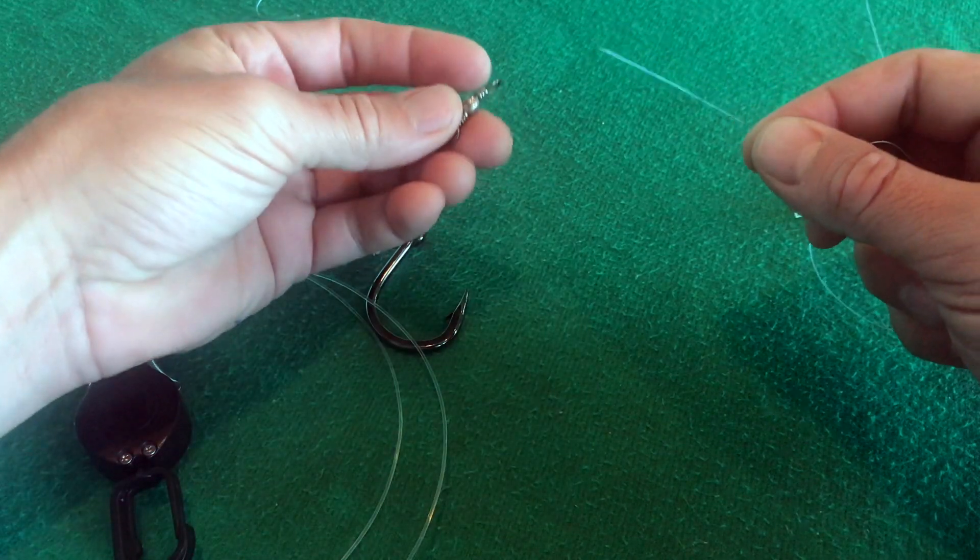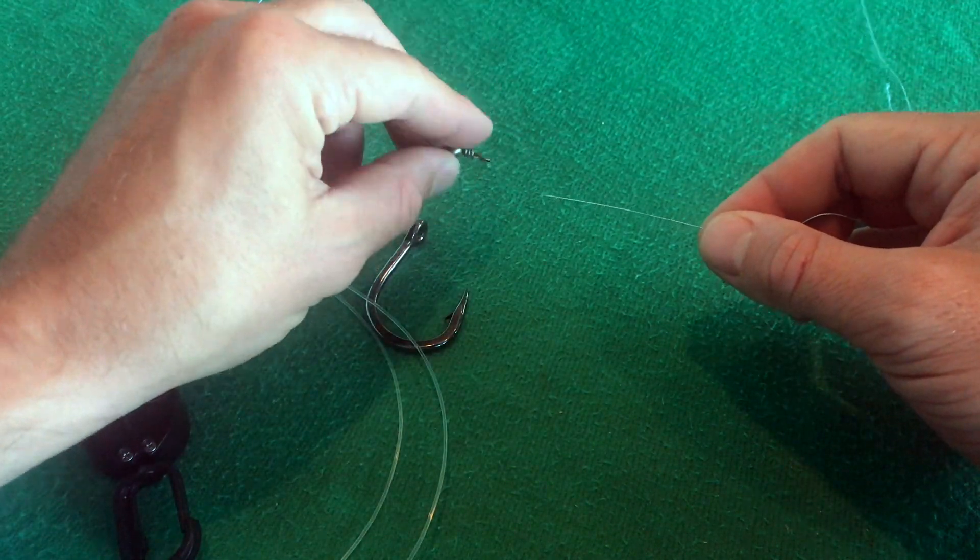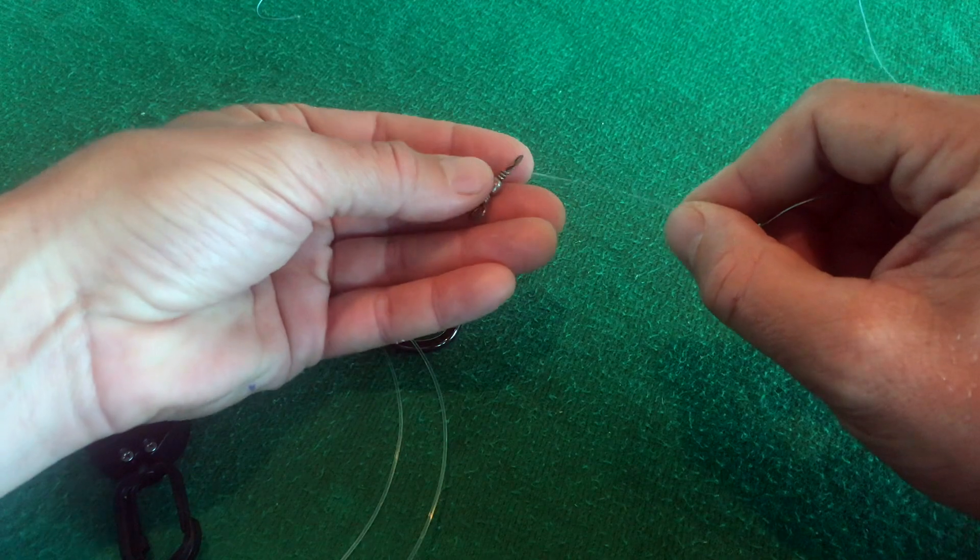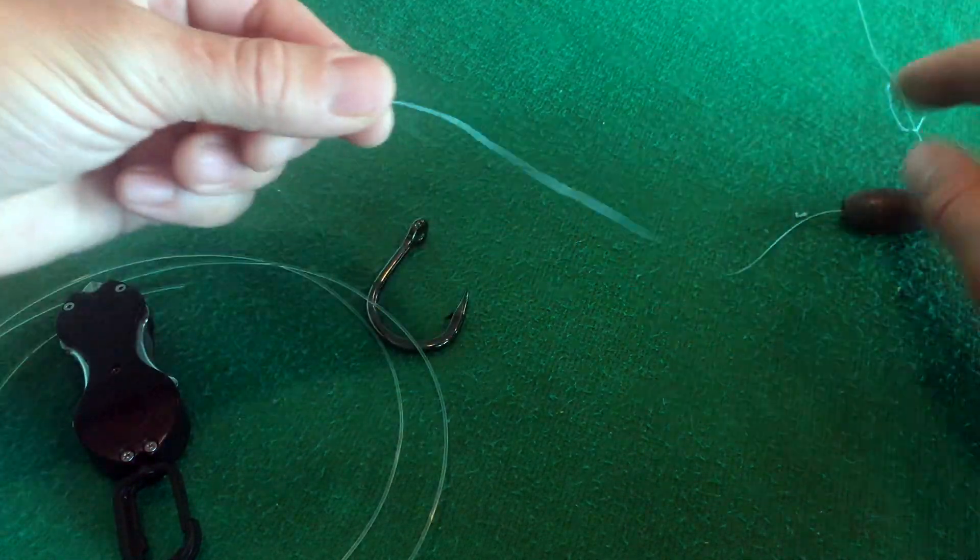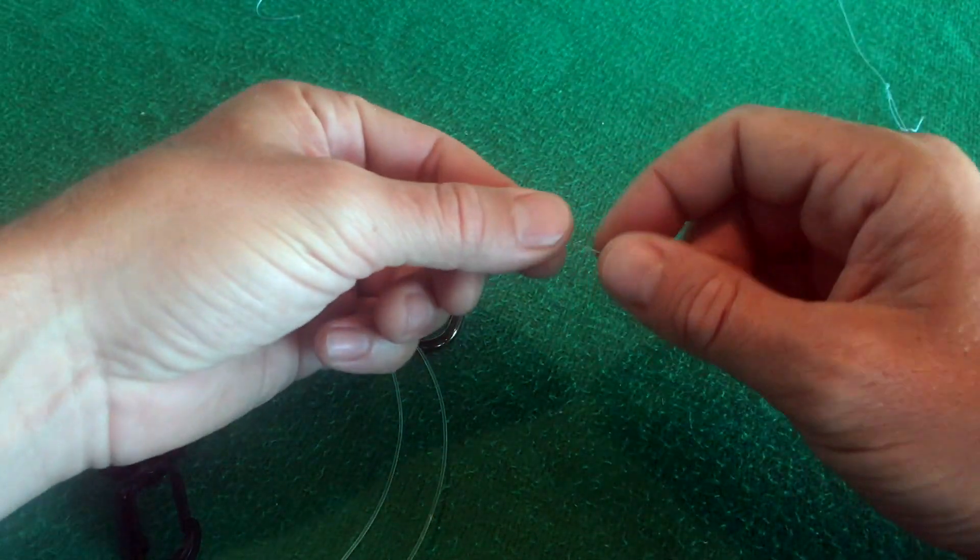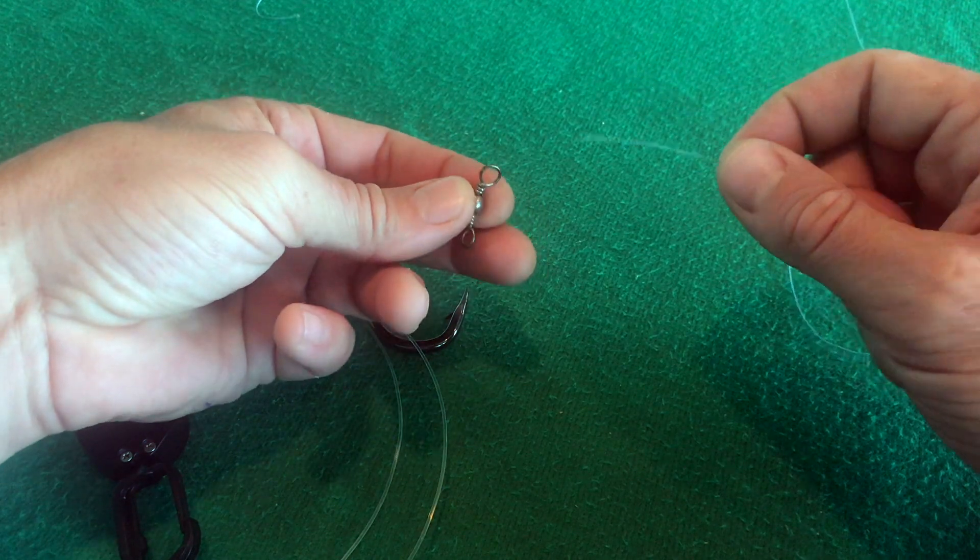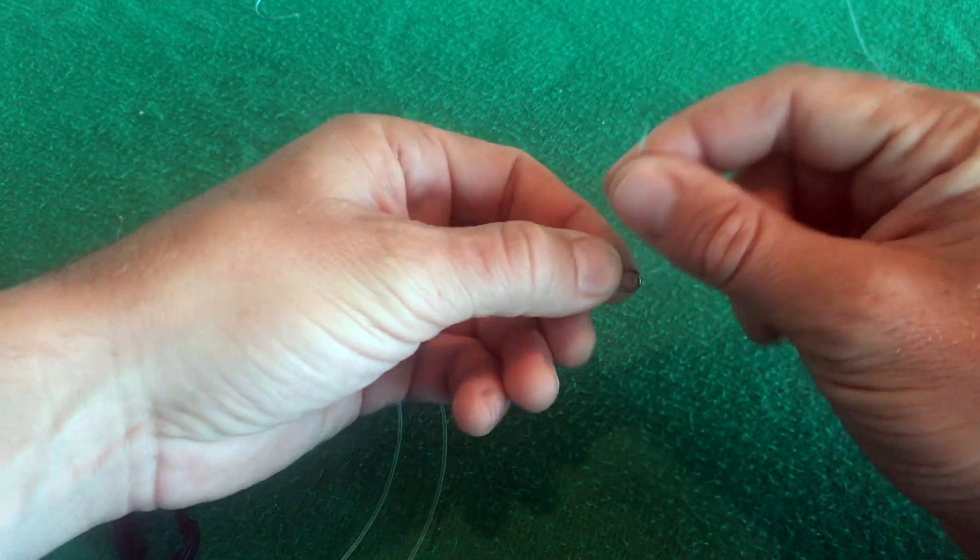And then we're going to attach a swivel right here. We're going to attach this swivel to our main line with the weight already on the main line. This is going to act as our stopper for the weight from sliding into our hook.